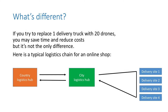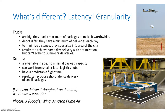Let's try to imagine how autonomous drones can change your business. For example, let's focus on the last mile of logistics chains. If you replace one delivery truck with 20 drones, you may save time and reduce costs. You have a country hub sending parcels to city hubs, and trucks go from house to house, office to office, to deliver parcels.